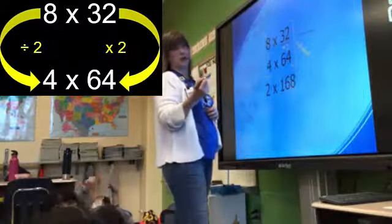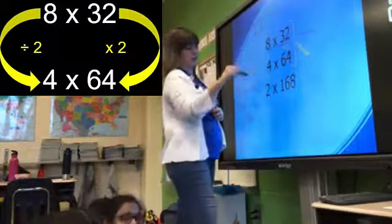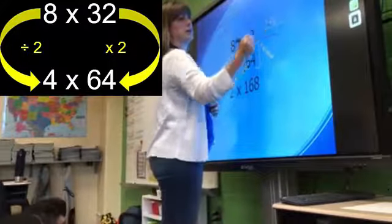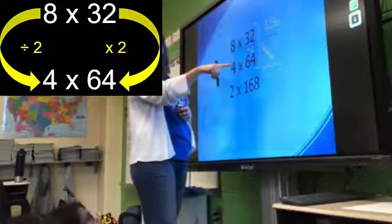So what Anish is saying is if Lana said that 8 times 32 is 256, he is saying that the product of 4 times 64 is also going to be 256.